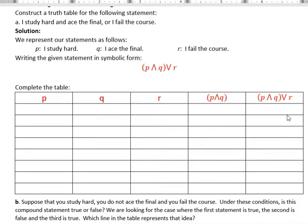In the first half, I'm saying I study hard and ace the final. So in this case, I'm studying hard and I'm acing the final. And then I'm saying or, and then or R. And R is I fail the course. So I can study hard and ace the final, or I can fail the course. That's writing that symbolically.